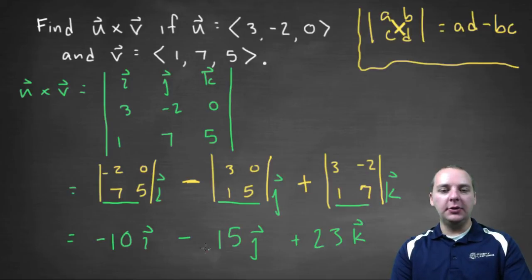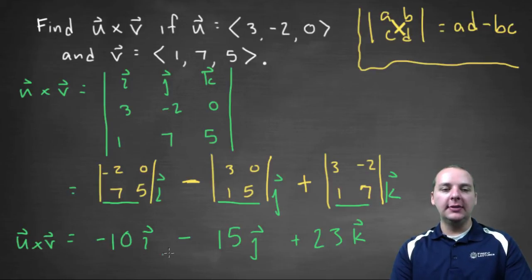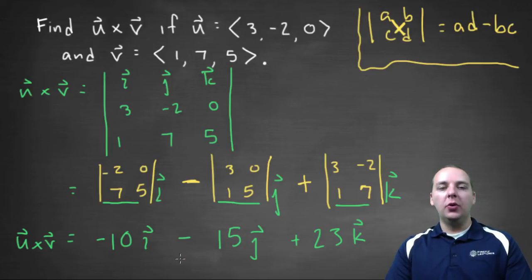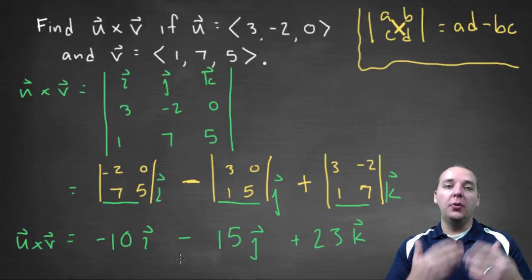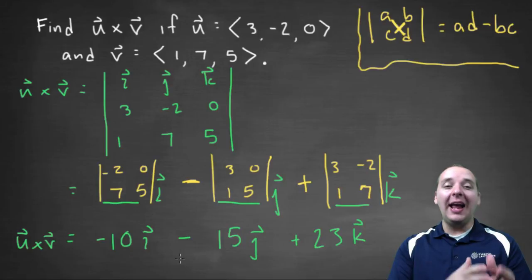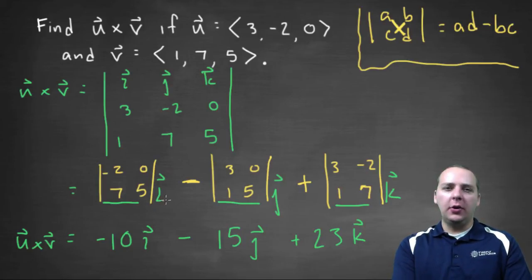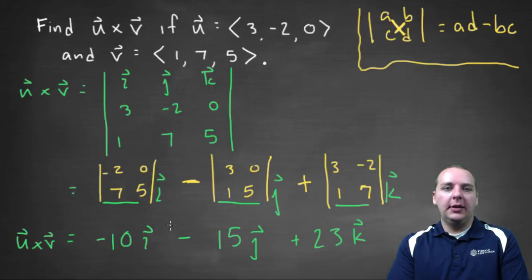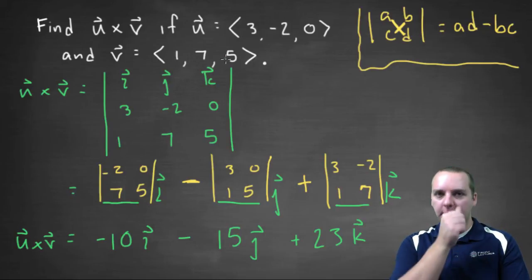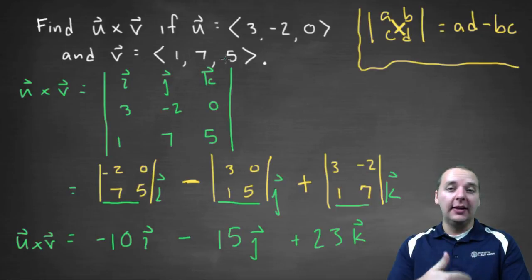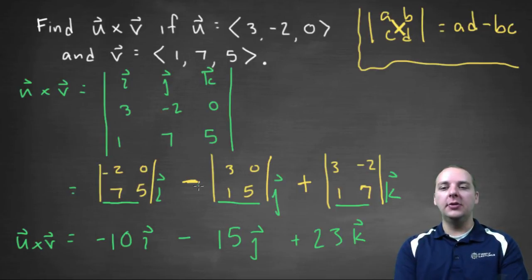So here's your answer. This is u cross v — it's a three-dimensional vector that is orthogonal to both u and v at the same time. A very good question you might have is: how do you know? These are hard to visualize in three-dimensional space. Is there any way you can guarantee that this really is orthogonal to these two vectors?